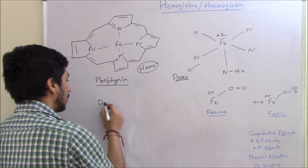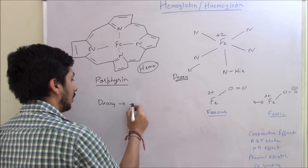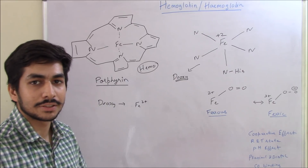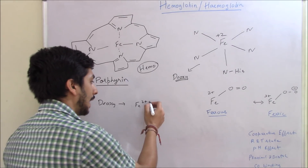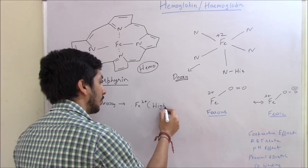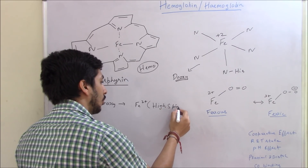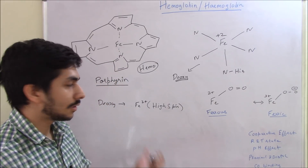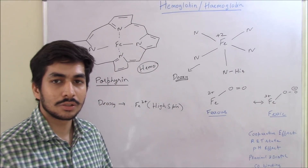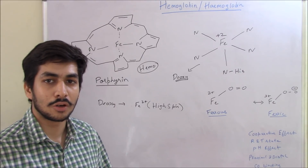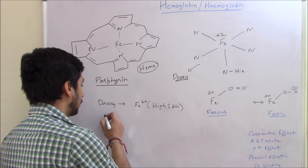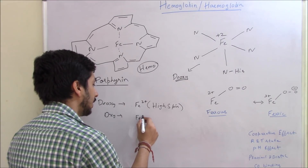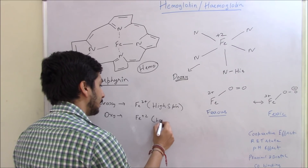So this iron is pentacoordinated when it's deoxygenated. In the deoxy form, iron is in the +2 oxidation state — that is Fe2+, ferrous iron — and it is a high spin complex. Once it binds to oxygen forming oxy hemoglobin, it is still in the +2 oxidation state but now it's low spin.